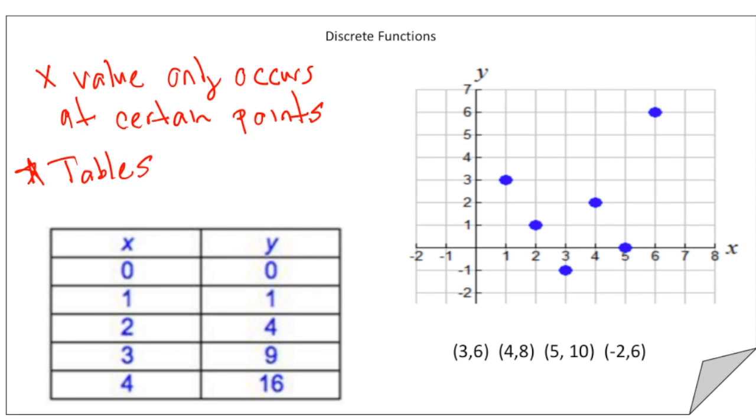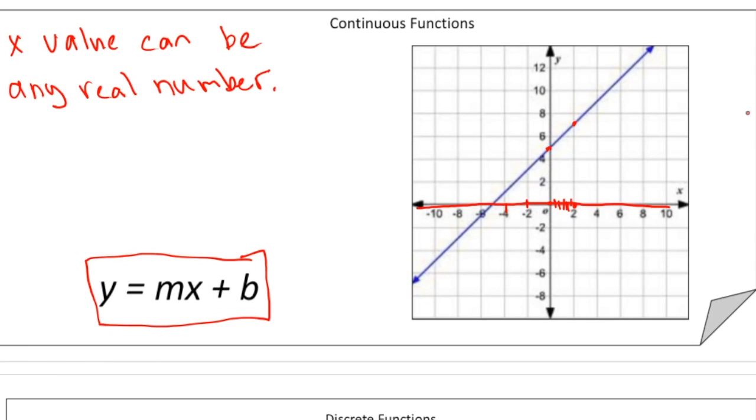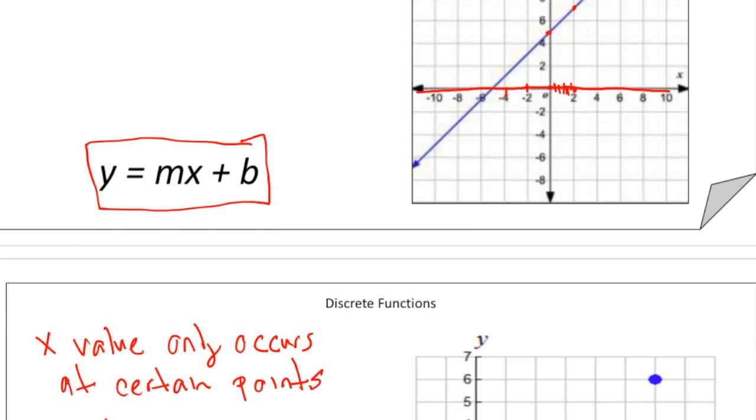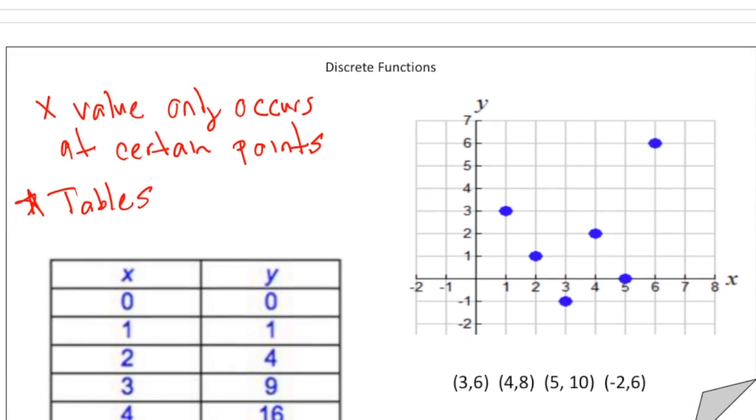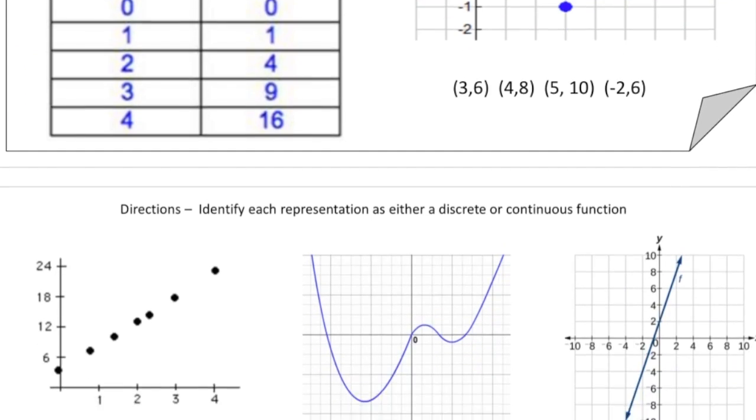So again, going back up to the continuous, when there's a value for all the x values, that's a sign that's continuous. And then going back down here, when there's only a few x values, like most tables have, that's a sign that it's a discrete function. So let's take a look at the next page.